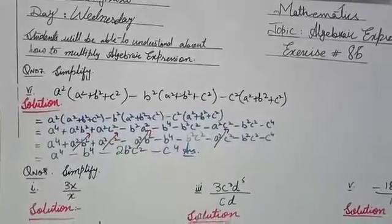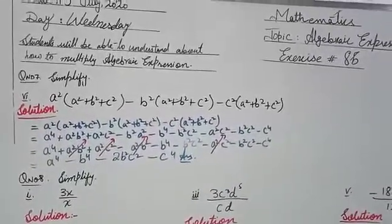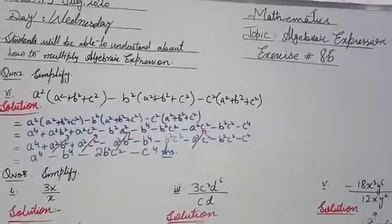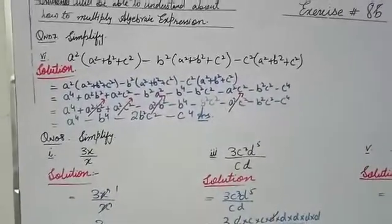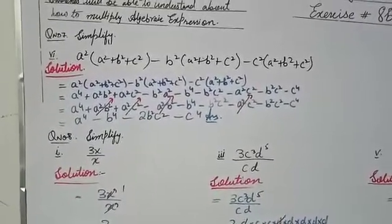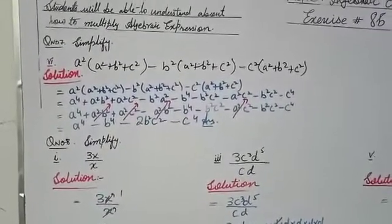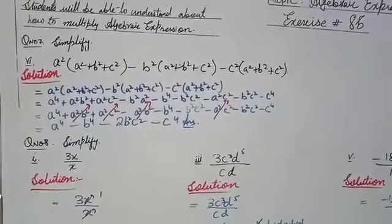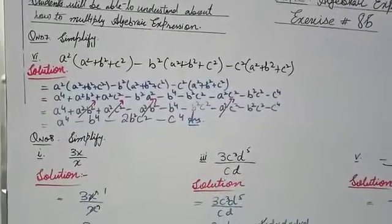Assalamu alaikum. Today we will do Chapter 8, topic Algebraic Expressions, Exercise 8B. Question number 7, part 6: a² into (a² + b² + c²) minus b² into (a² + b² + c²) minus c² into (a² + b² + c²).